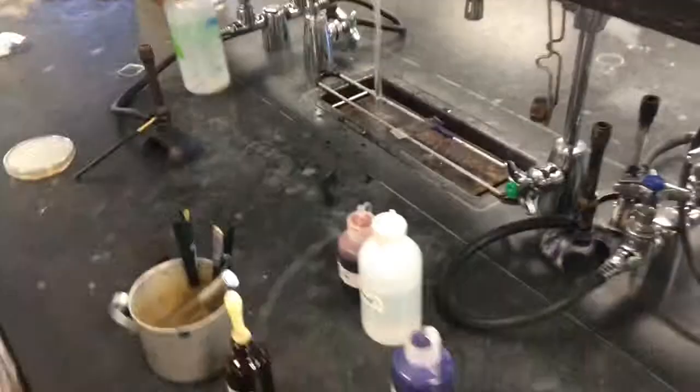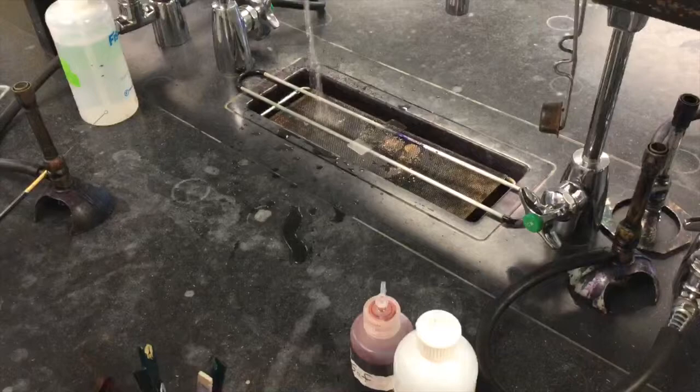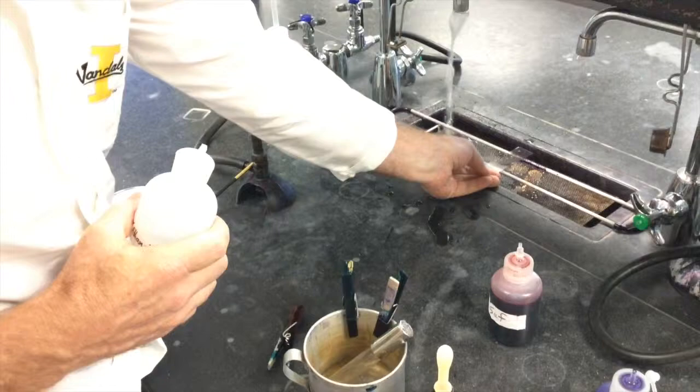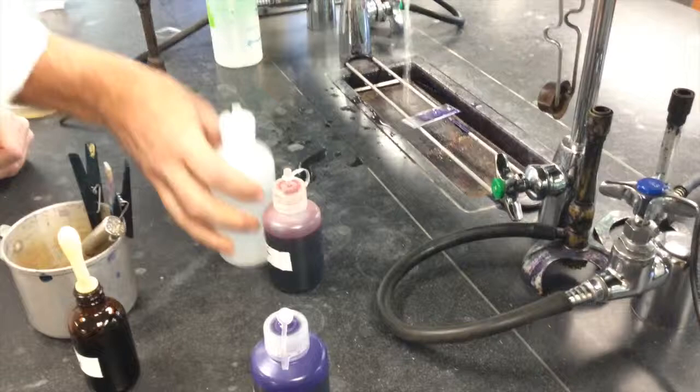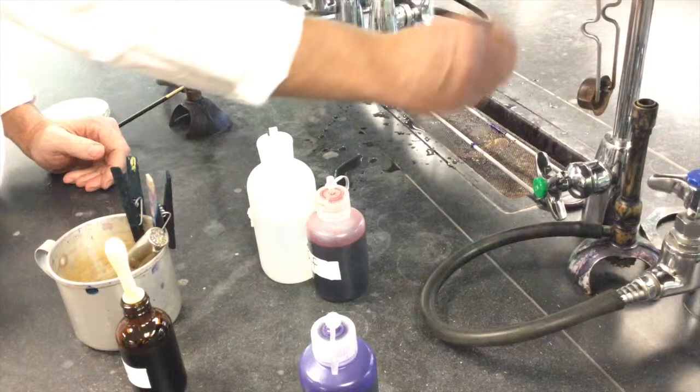So now my slide has been washed and it's ready for decolorization. And today we're just going to do the timed decolorization step. And so to do this, you want to make sure your slide is flat on your staining rack. And you want to flood your slide with the alcohol and count 10 to 15 seconds. So it's been 15 to 10 seconds. And you want to stop the decolorization by washing it gently with water. That's our decolorization.